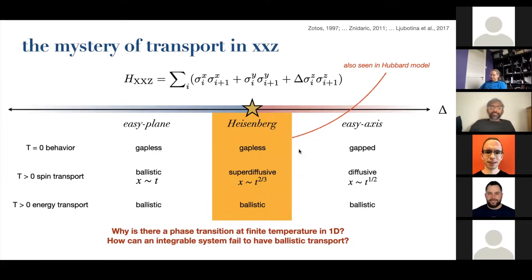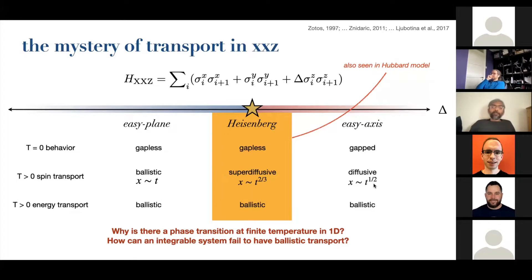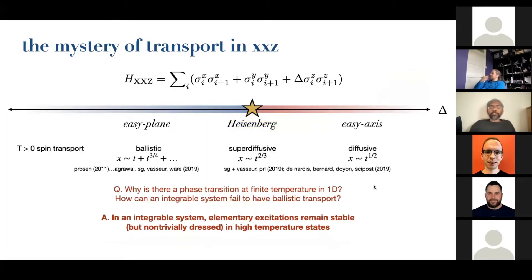Interestingly, this transition in spin transport seems to coincide with a zero-temperature transition in the nature of the ground state: the ground state goes from being gapless and having a continuous symmetry breaking to being gapped and breaking a discrete Ising symmetry at the phase transition. You might say, it's one dimension, so any finite temperature should get rid of this phase transition — so why do you see any vestige of it in the high-temperature dynamics? Another question is how can an integrable system fail to have ballistic transport? These questions have been floating around for about a decade.